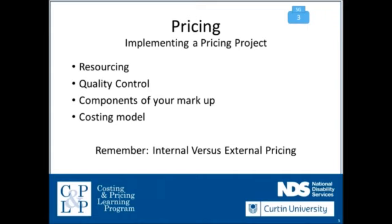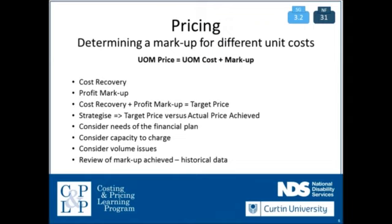Let's have a look at some components of pricing. The UOM price — the unit of measurement price or activity price — is the item we actually sell, whether it's a service or a good. The UOM price equals the UOM costs plus a markup. This idea of a markup is really important. It's not one we've often considered, particularly in the disability sector where, by far and away, most providers are not-for-profit and charitable organisations. Traditionally, we haven't thought about markup because we haven't had the ability to determine prices.